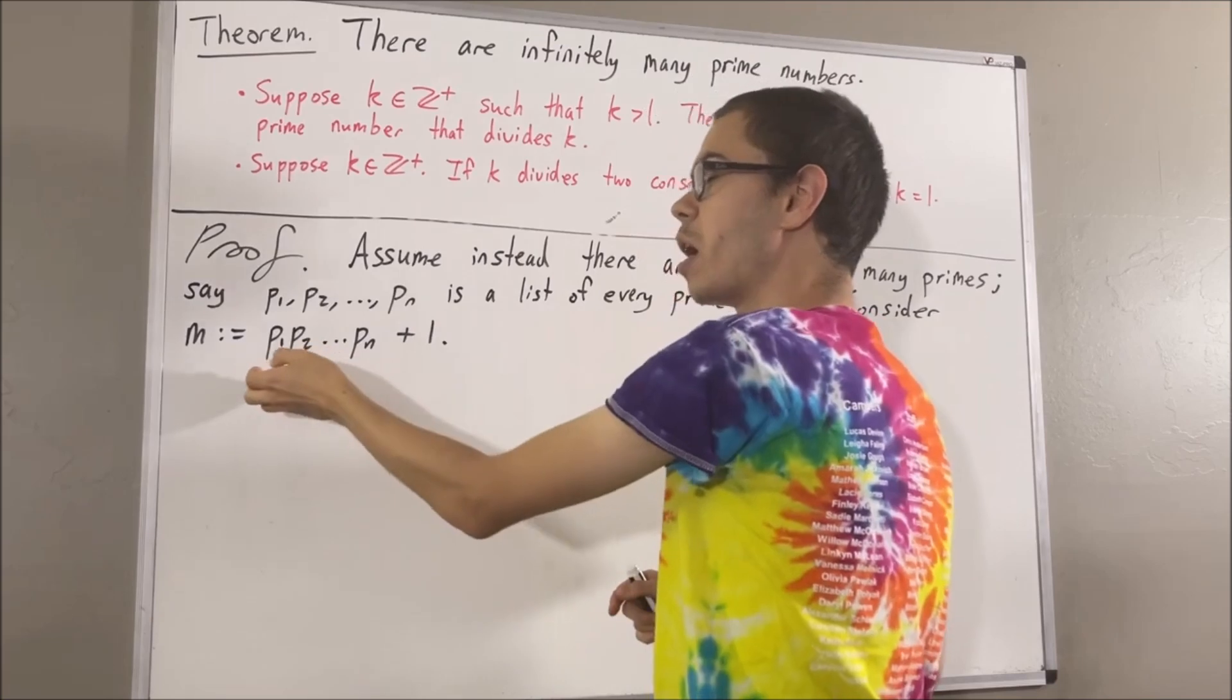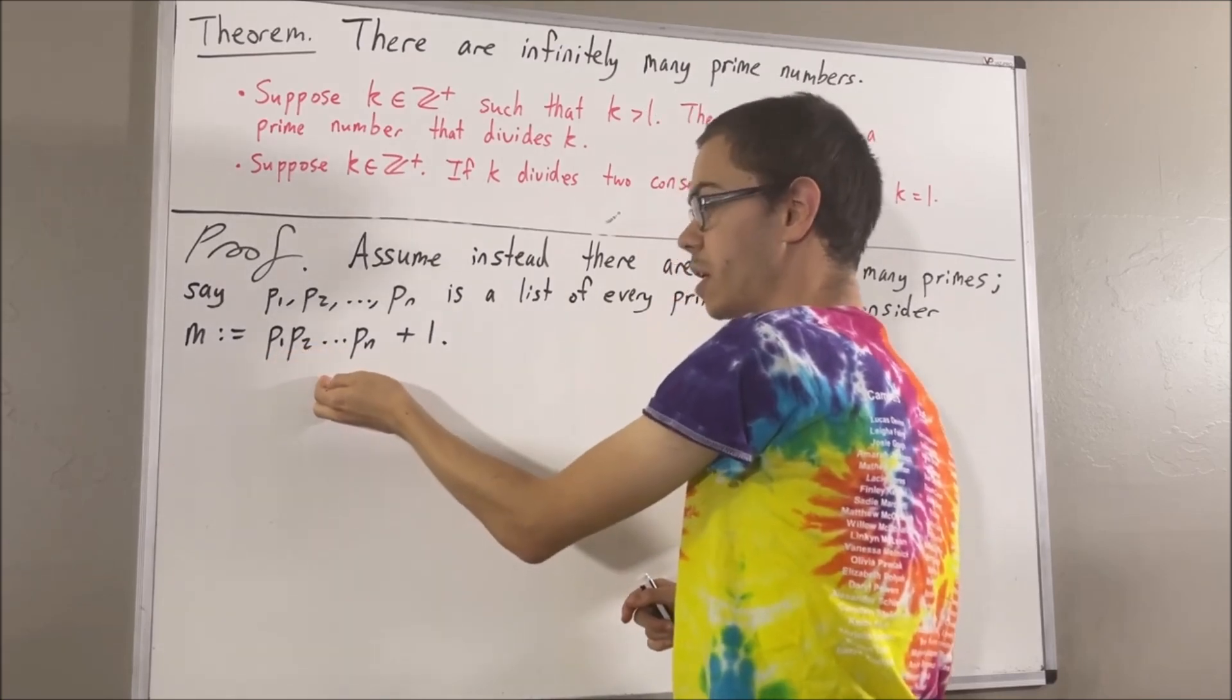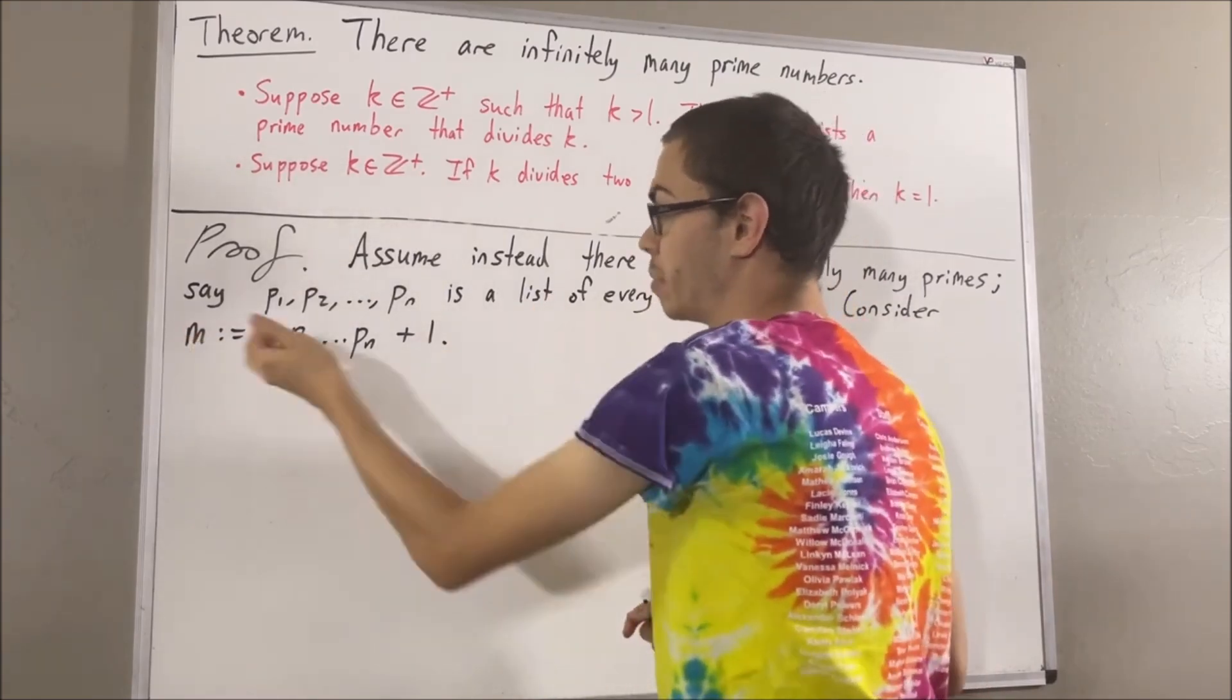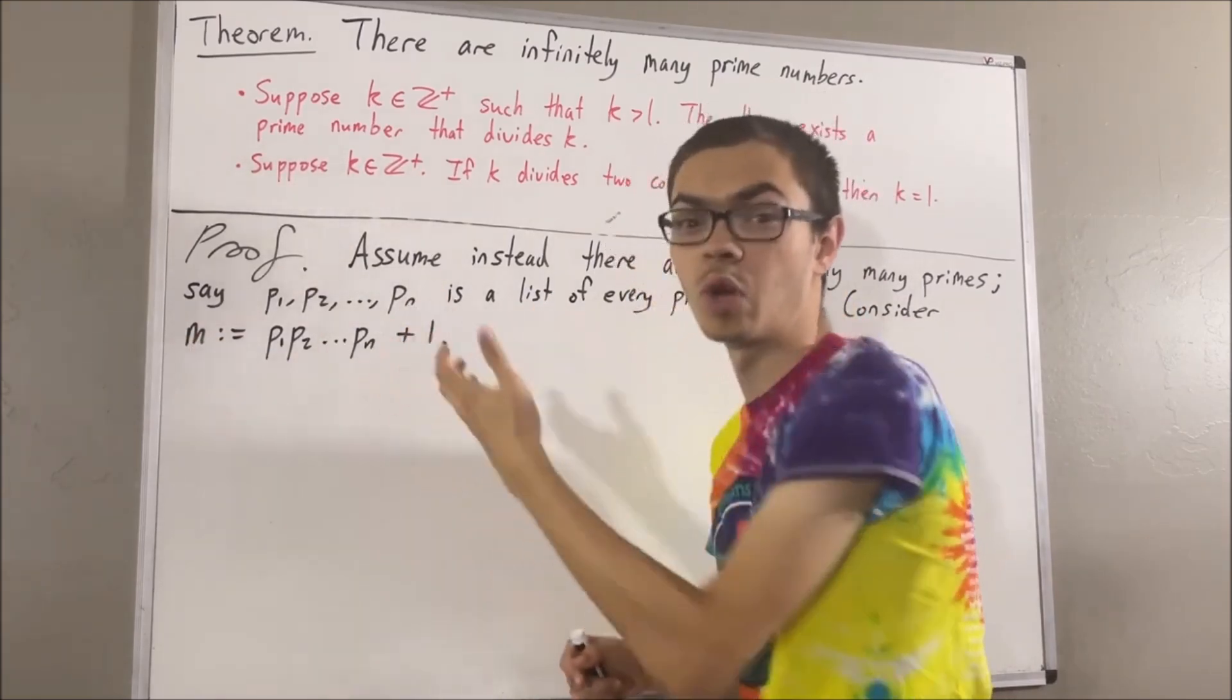Now, we know that a product of positive integers is also a positive integer. Add 1 to that, this tells us that n must be a positive integer greater than 1.